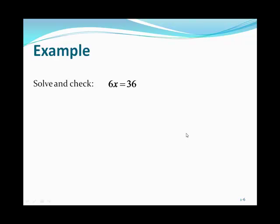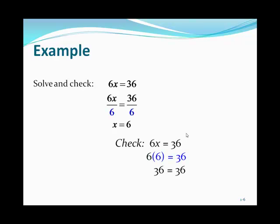Here's an example: 6x equals 36. This is a multiplication equation, so we divide by 6 — the number being multiplied by x. Dividing by 6 on the left-hand side gives 6 over 6 equals 1, so 1 times x is x. On the right-hand side, 36 divided by 6 equals 6. Check by substituting back: 6 times 6 is 36, a true statement, so x equals 6 is correct.